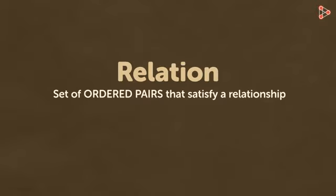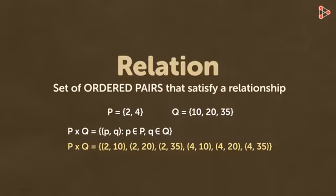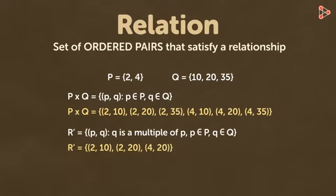We know that a relation is a set of ordered pairs that satisfy a relationship. This was the Cartesian product of sets P and Q we had seen previously. And this is set R'. There is a relation here. The second number here is a multiple of the first in each case.